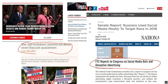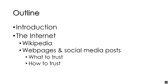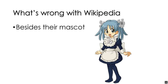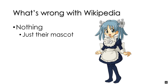So that's the context and our introduction. I'm going to talk about the internet, starting out with Wikipedia, then web pages and social media posts. So what's wrong with Wikipedia besides their mascot — Wikipedia-chan or something like that? The answer: nothing.